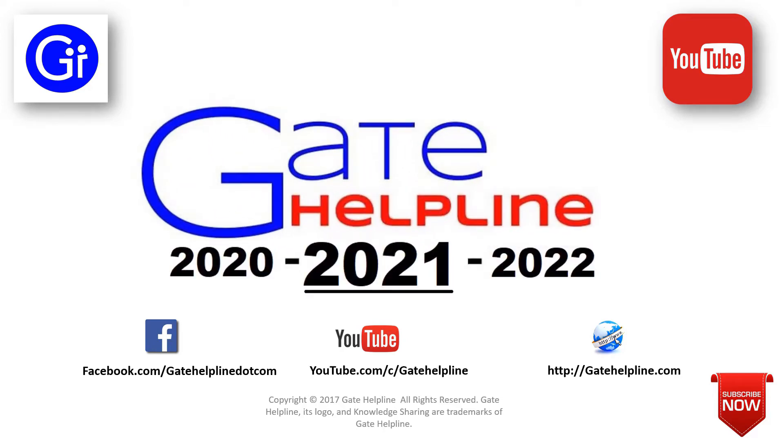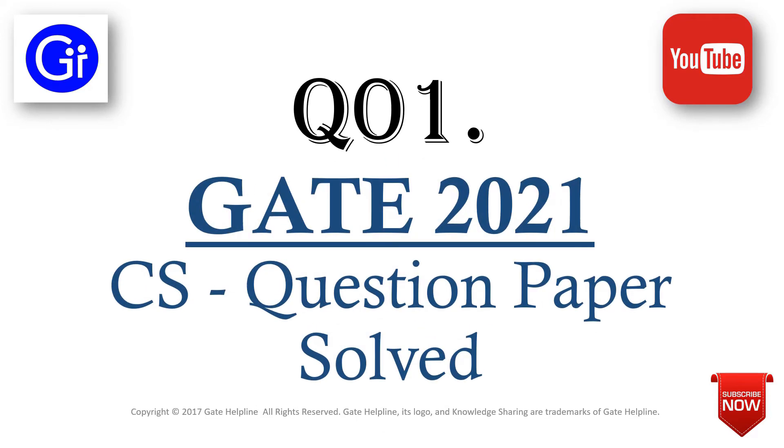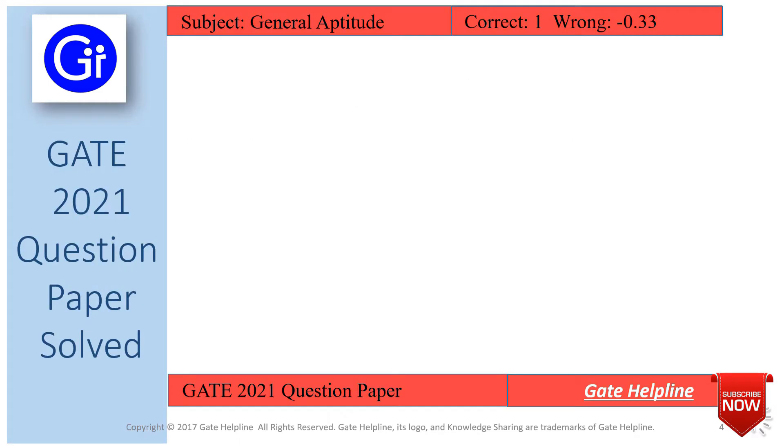Hi all, you're watching Gate Helpline. In this video we'll see question number one from GATE 2021 CS question paper. Friends, question number one is from General Aptitude and it carries one mark.